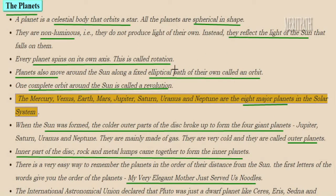A planet is nothing but a celestial object which orbits around a star. All the planets are spherical in shape. Planets are non-luminous — unlike stars, they cannot produce their own light. They reflect the light of the sun which falls on them. Every planet rotates on its own axis, which is known as rotation. In addition to that, all planets also revolve around the sun in an elliptical path known as the orbit. One complete orbit makes one revolution around the sun.